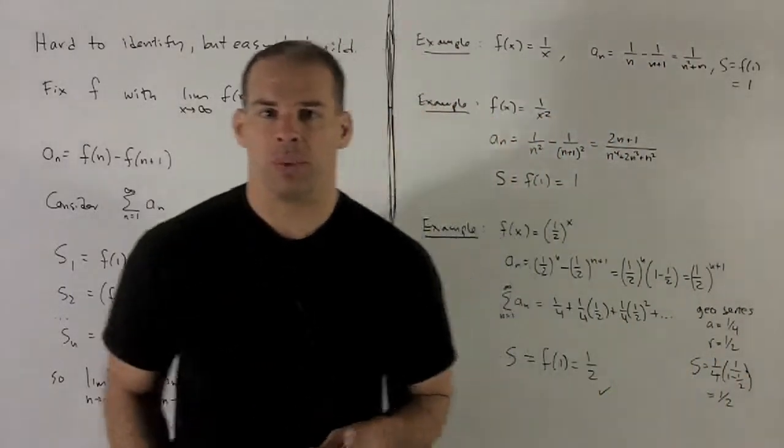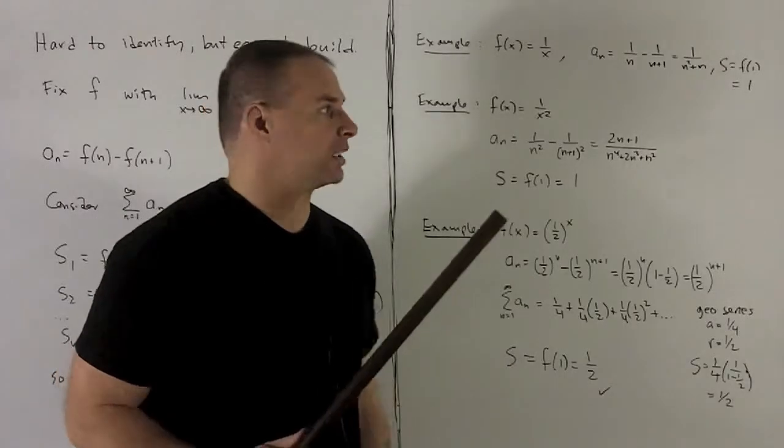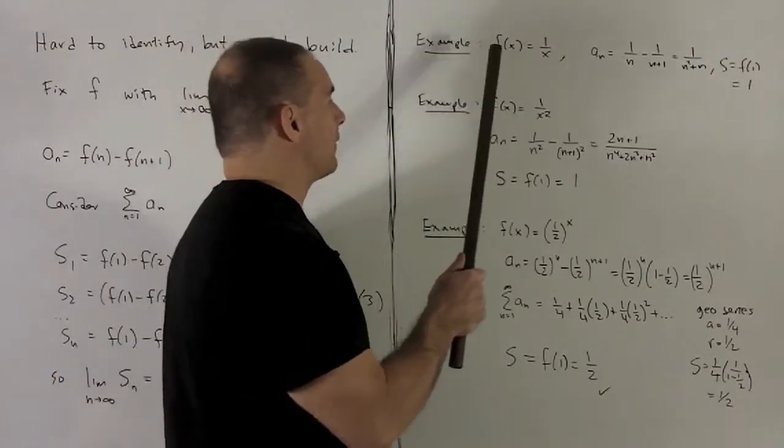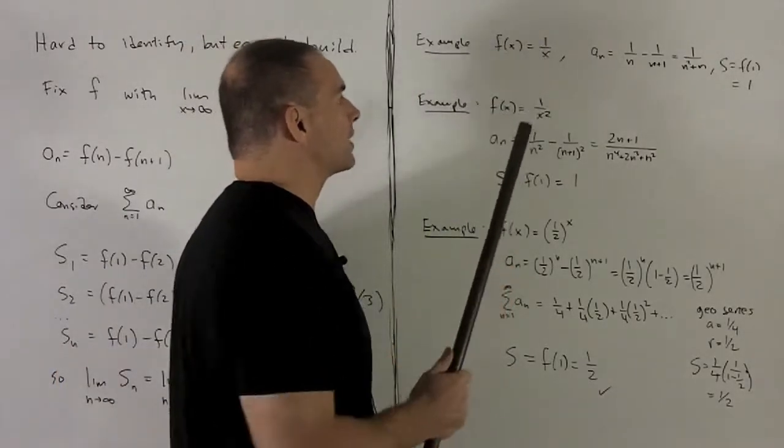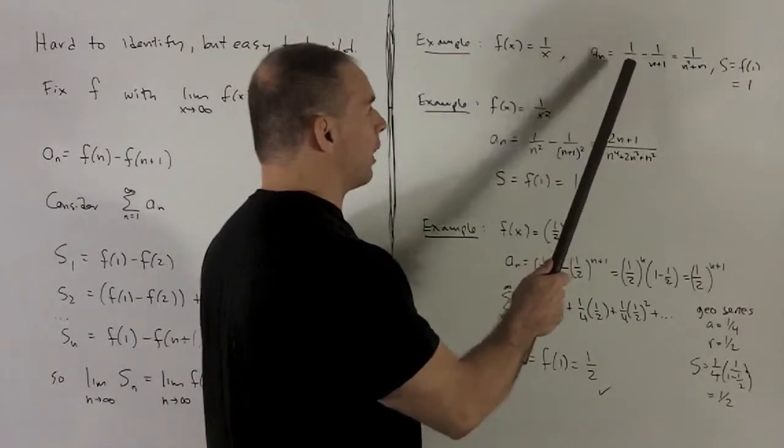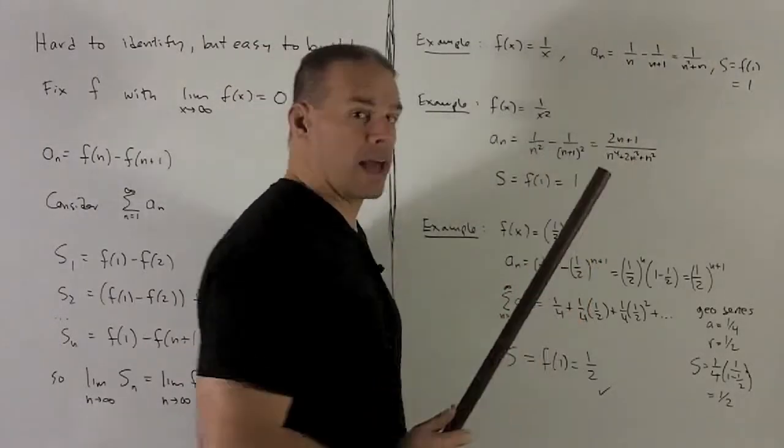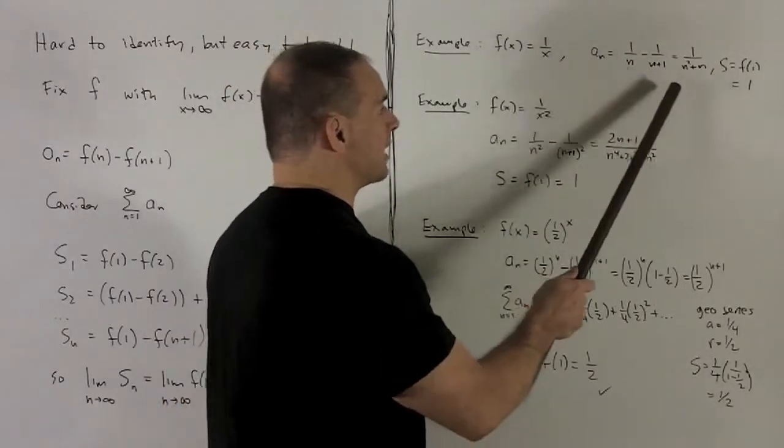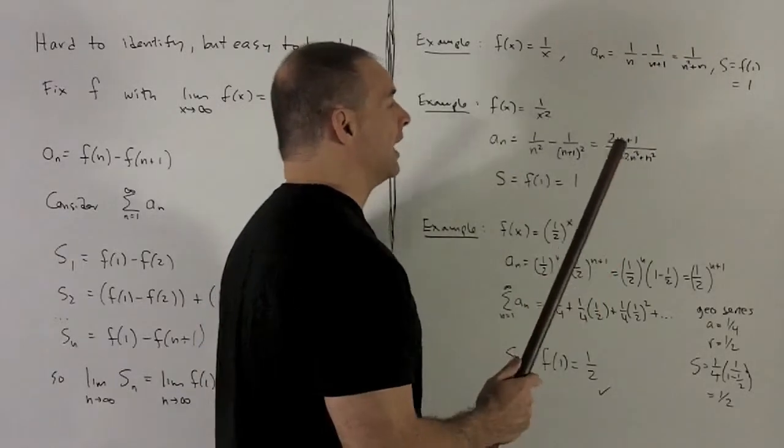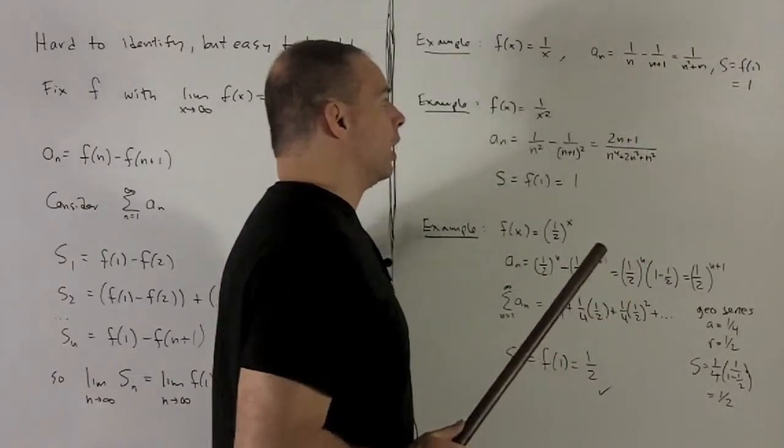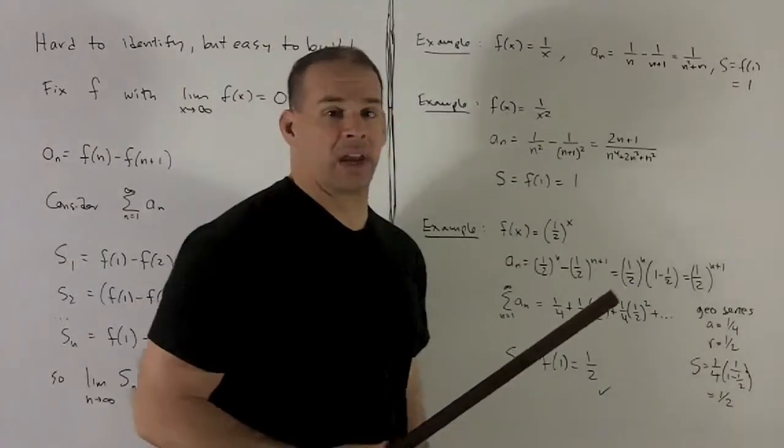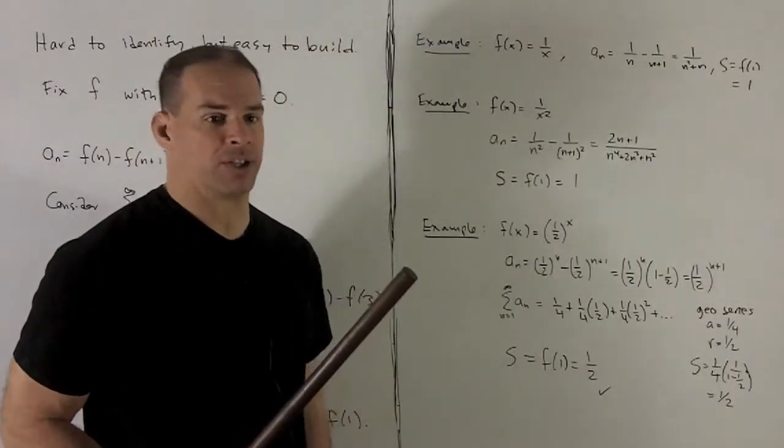Let's see how that factors in with the example we just looked at. In that case, we're going to have f of x equal to 1 over x. Our a sub n is 1 over n minus 1 over n plus 1, as we saw. Collapses down to 1 over n squared plus n. And the sum is going to be equal to f of 1, which is equal to 1. So that agrees with everything we saw in the first example.